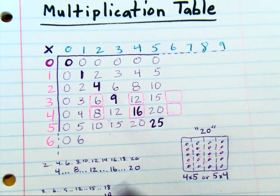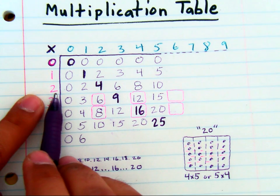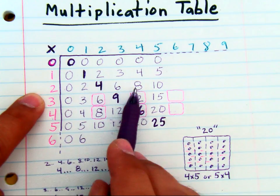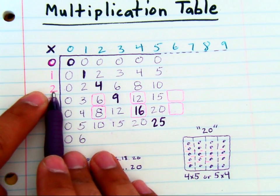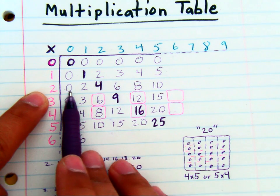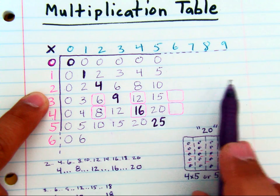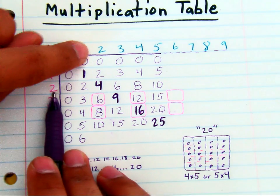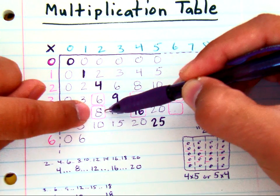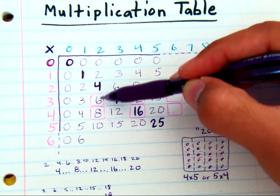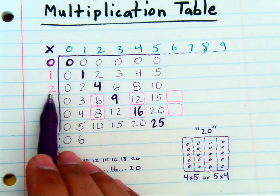Now there are other patterns here that I want to talk about. For example, twos are easy: zero, two, four, six, eight, ten. If you read all the factors of two across, you're gonna see that you get all even numbers as far up as you can go. Now if you start from the column at the top and count down - zero, two, four, six, eight, ten - you see the pattern exists there too. So this table shows the pattern twice for every number.